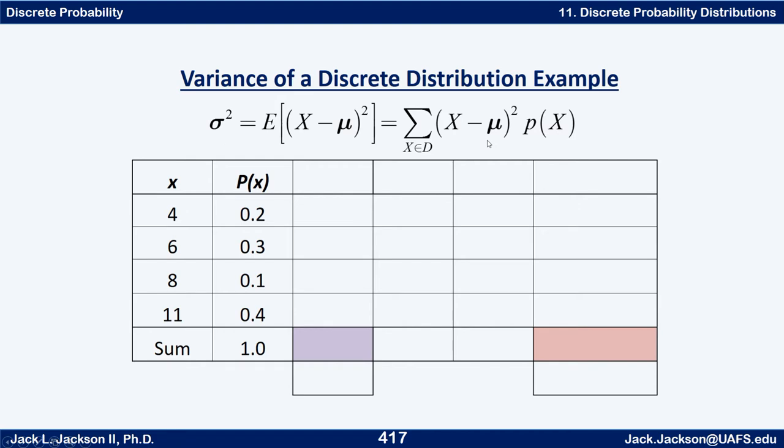Now before we can get going with this, we have to actually find the mean. From our last video, we see that we must multiply the X value times the probability, which is what we're going to put here, and add them up. That will be the mean in the purple box. So 4 times 0.2 is 0.8, 6 times 0.3 is 1.8, 8 times 0.1 is 0.8, and 11 times 0.4 is 4.4. Add those up, we get 7.8 as our mean.